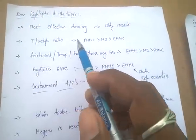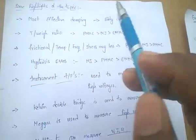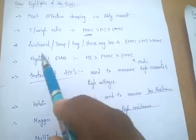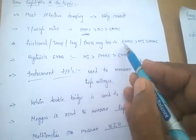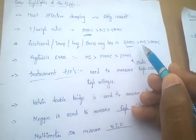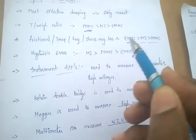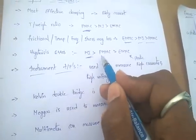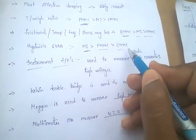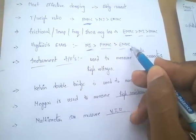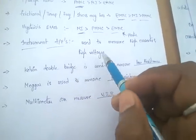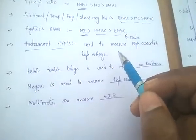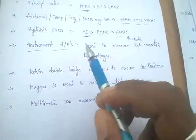Some important topics: the most efficient damping is eddy current damping. PMMC has high torque-to-weight ratio. Hysteresis errors are higher in MI type meters. Instrument transformers are used to measure high currents and high voltages.